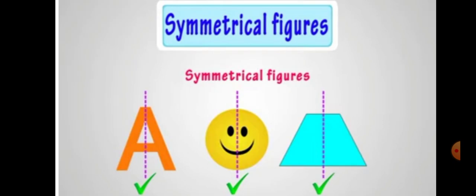Now a few more examples. Here we have letter A. Here you can see when we overlap one half on the other half, it exactly covers the other half. So this letter A is symmetrical.